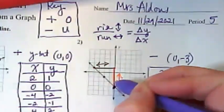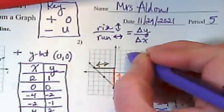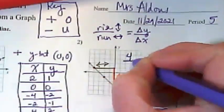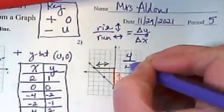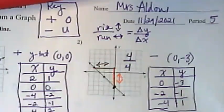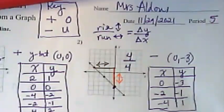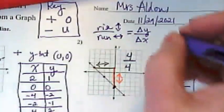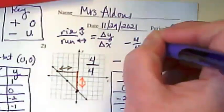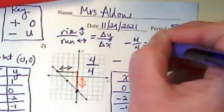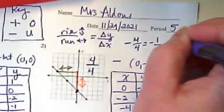You start here and count the next one, two, three, four. So my rise is 4. And then my run is 1, 2, 3, 4. It's also 4 over 4. What is that equal to? 1. So the slope in this case is negative 4 over 4, which is also equal to negative 1 over 1, which is also just equal to negative 1.